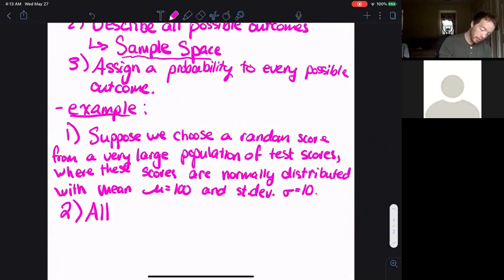The thing to notice here is all possible outcomes in this case is all real numbers. You could have a score of 100, but you could also have 101.333333. There are an infinite amount of different numbers you could choose.